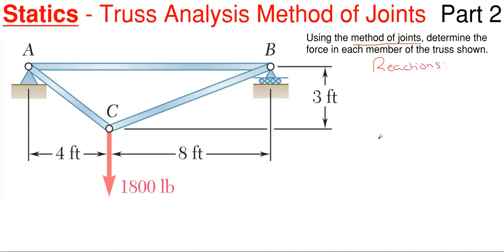So with this one, I'm just going to assume that we have a BY upwards since it is a roller. Since we have a pin over here, I'm going to assume AY is upward as well, and there are no horizontal applied forces to this truss, so I automatically know that A sub X is equal to zero. So all I need to do is find BY and A sub Y.